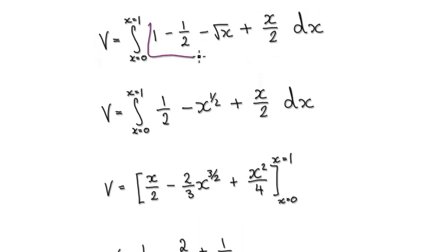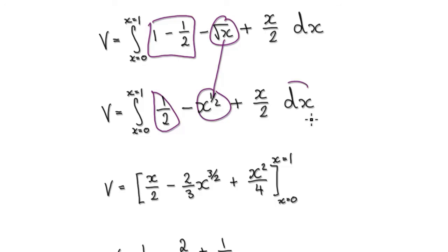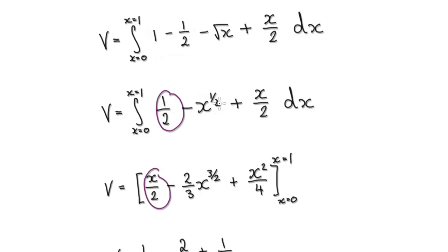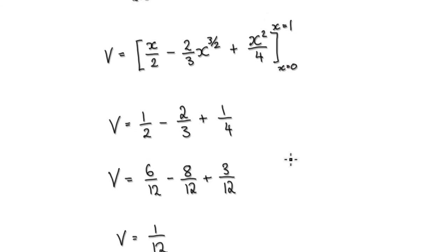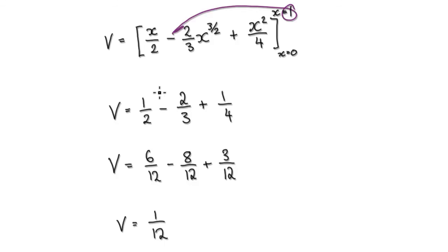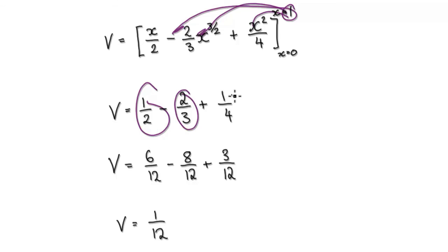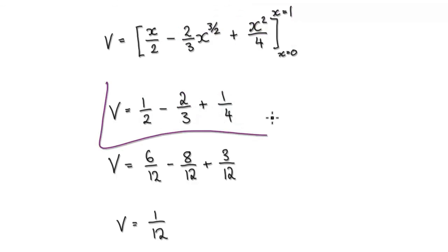Rewrite the square root as a fractional exponent and now integrate. Integrating each term with respect to x from 0 to 1, and evaluating: putting 1 in gives the values; putting 0 in gives 0. Tidying this up, the volume is 1 over 12.